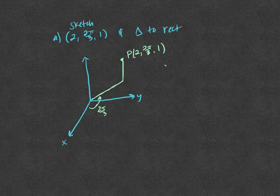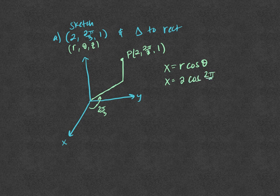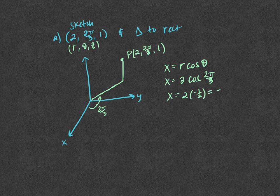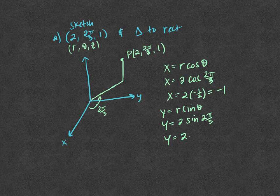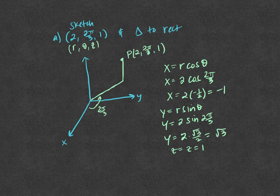Now we're going to change it to rectangular. x equals r cosine θ. This is r, θ, z in this point. So x equals r, which is 2, times cosine of 2π/3. Cosine of π/3 is 1/2, and in the second quadrant it's negative 1/2. So 2 times negative 1/2 equals negative 1. Then y equals r sine θ: y equals 2 times sine of 2π/3. Sine of π/3 is √3/2, and in the second quadrant it's still positive, so 2 times √3/2 equals √3. And z stays z, which is 1. So in rectangular coordinates we have (−1, √3, 1).